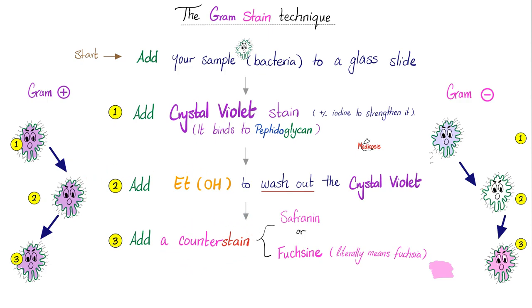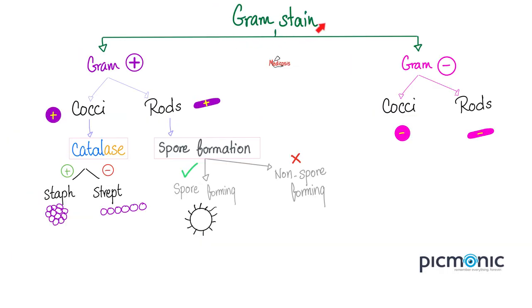Next, you add a counter stain — a pink stain such as safranin or fuchsin. This is how the gram stain helps you differentiate: gram-positive will remain purple throughout because the purple was never washed out. But gram-negative started purple, then the purple was washed out by ethanol, and then they acquired the pink color of the counter stain — counter to the original crystal violet stain.